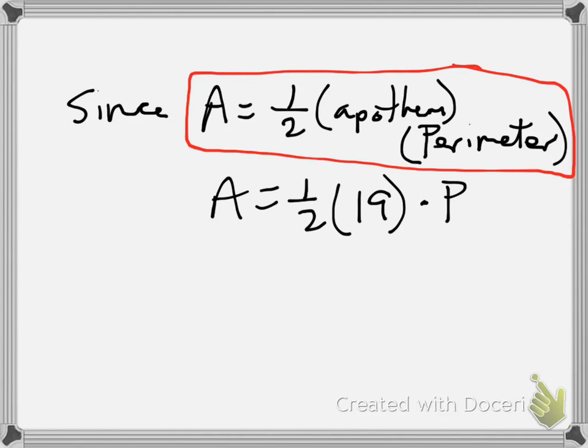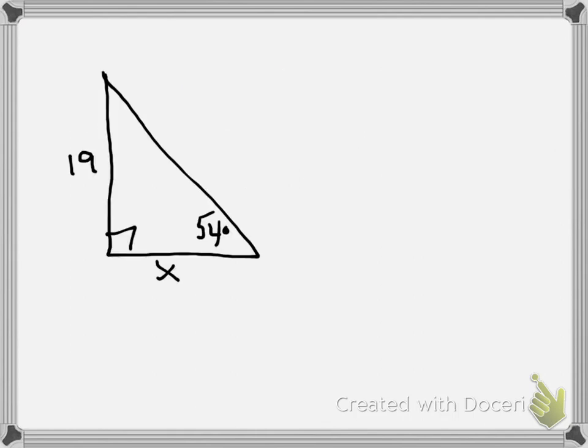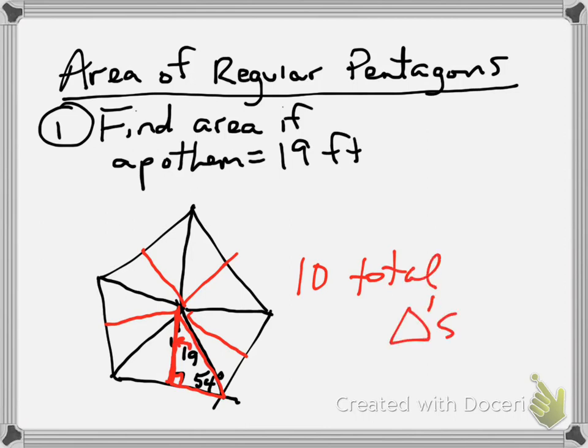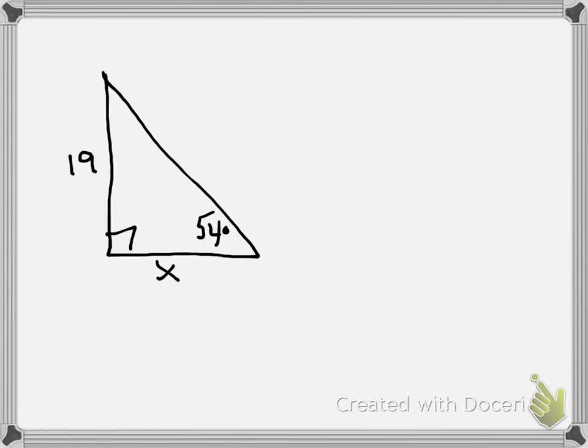We already know what the apothem is—the apothem is 19, so we can plug 19 in right away. We have to find the perimeter, so we're going to take this little right triangle right here. If I drew the apothem into all these triangles, we would have 10 total triangles.